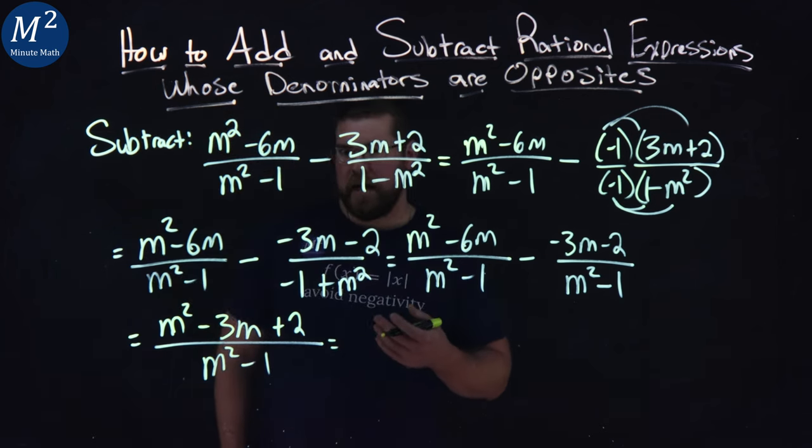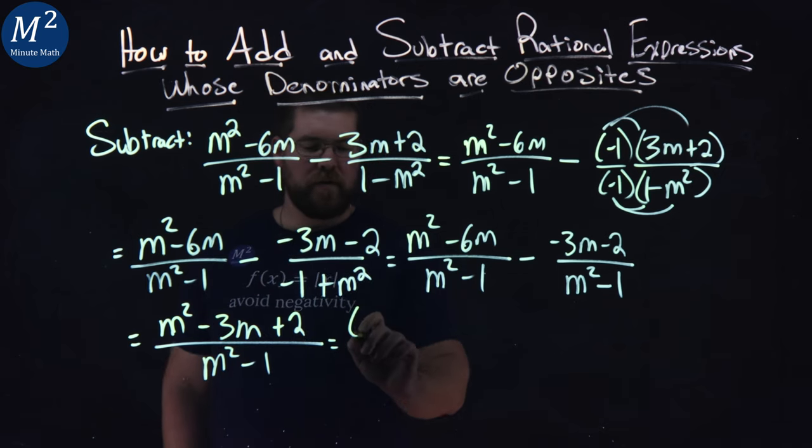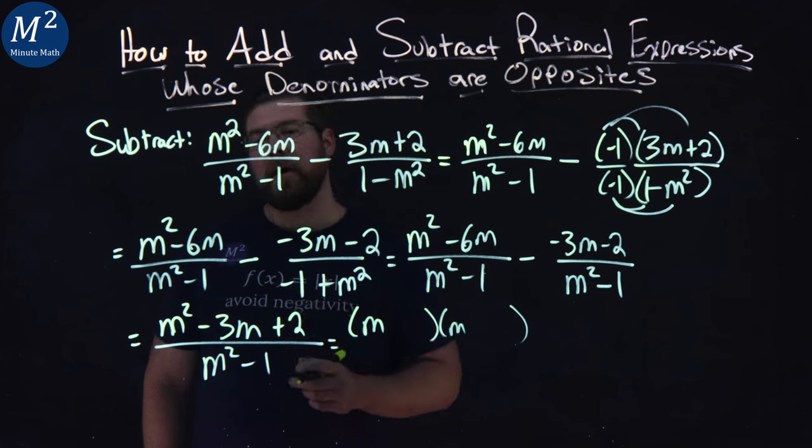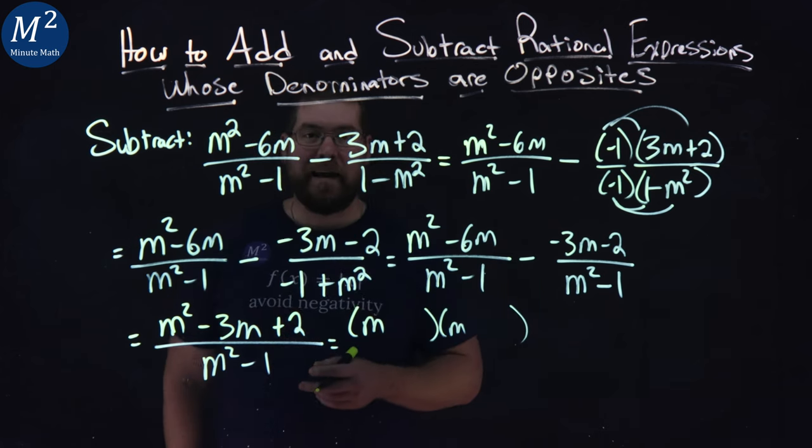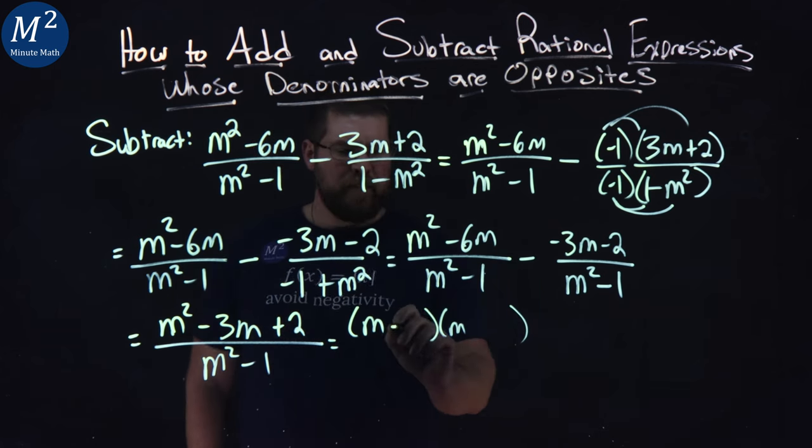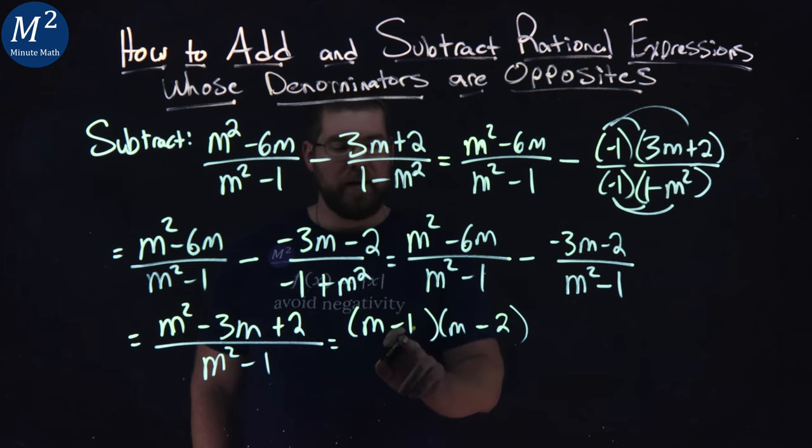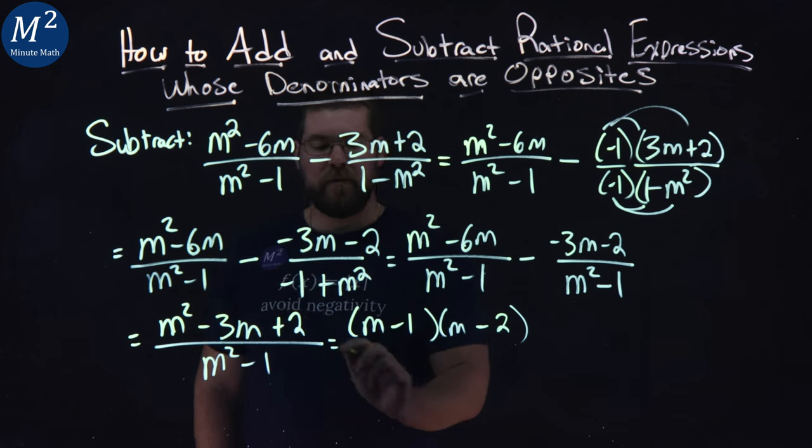Now, can this factor at all? What two numbers in the top, m, m, what two numbers multiply to be positive 2, but add to be negative 3? I'm seeing minus 1 and minus 2. Negative 1 times negative 2 is positive 2. Negative 1 plus negative 2 is negative 3.